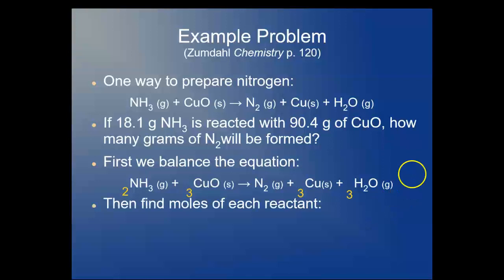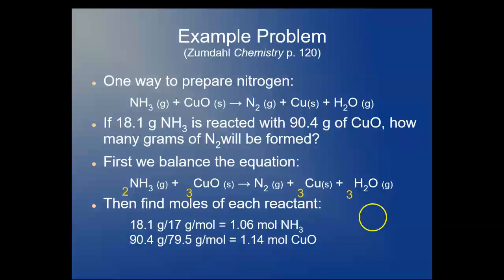Now you find moles of each reactant from the number of grams up top, so you divide 18.1 by 17 grams a mole for the ammonia, you get 1.06 moles, and 90.4 grams of the copper oxide, you divide that by its molar mass of 79.5, and you get 1.14 moles of the copper oxide. The ammonia is 17.0 grams per mole, it's got three sig digs, so we can move on.